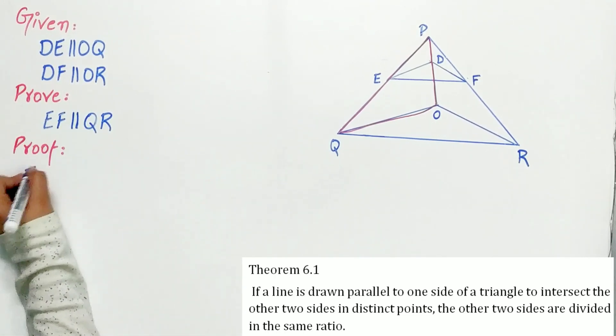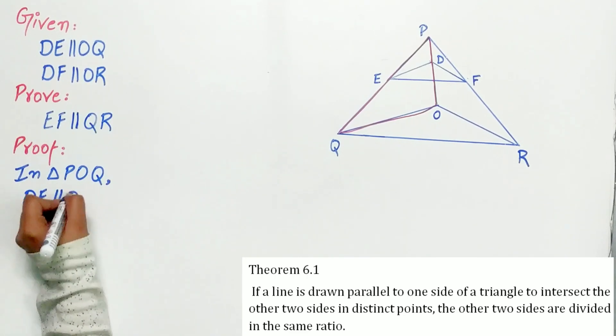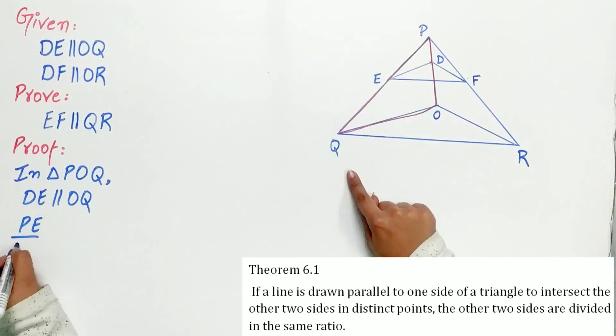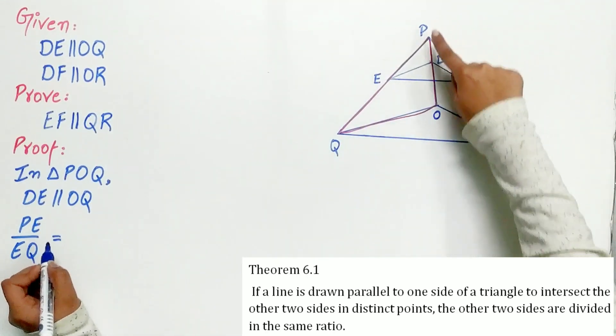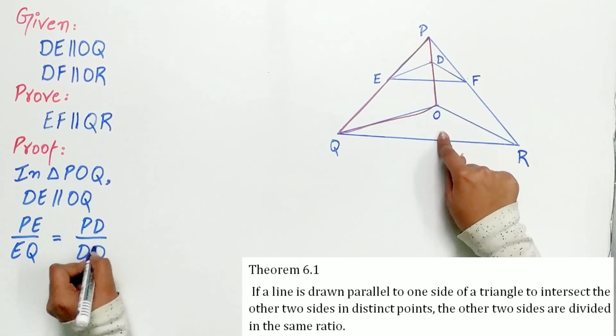So, in triangle POQ, DE is parallel to OQ. Hence, by theorem 6.1, PE by EQ is equal to PD by DO. Let's mark it as one.